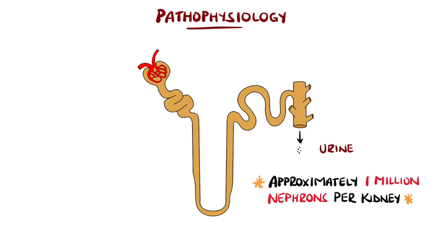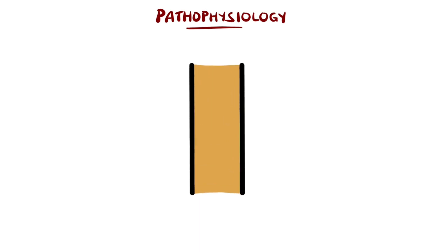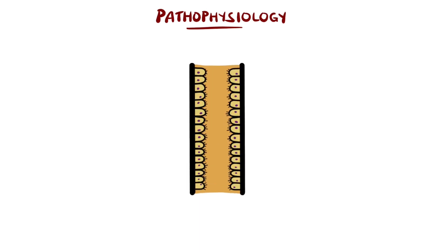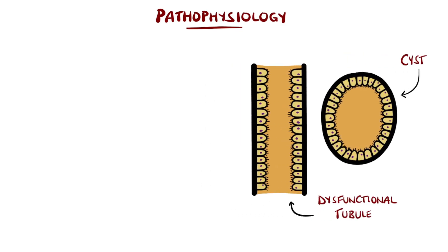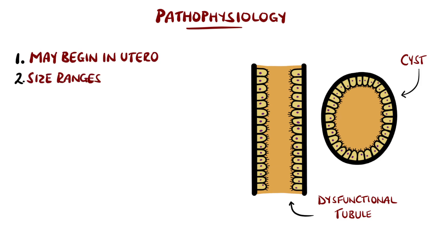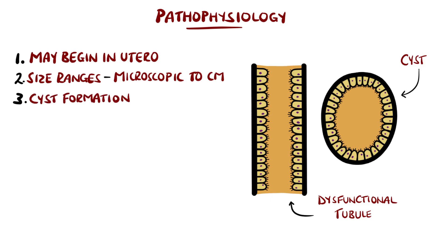Overall, there are around 1 million of these nephrons in each kidney. In polycystic kidney disease, these tubules develop into cysts, which become filled with fluid and can range in size from being microscopic to several centimetres. The process can start even in utero, meaning in the womb. As the tubules become cysts, they cannot carry out the normal filtering function, and therefore the number of functioning nephrons begins to decrease.